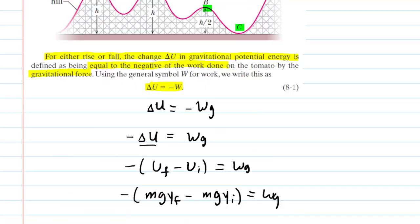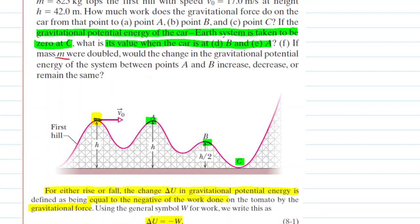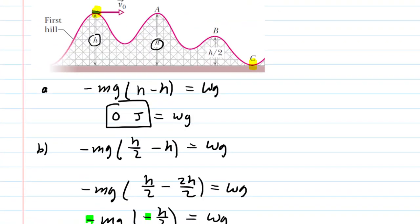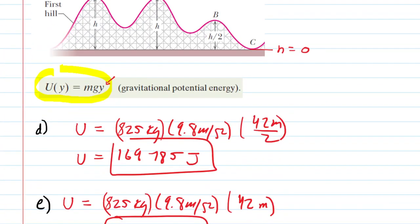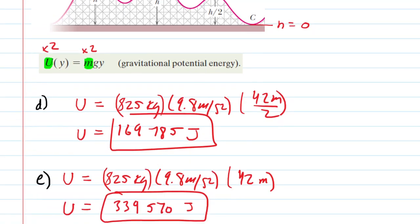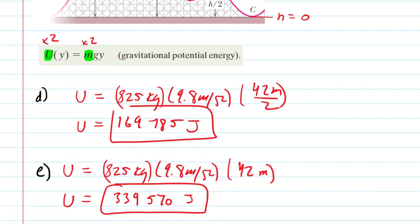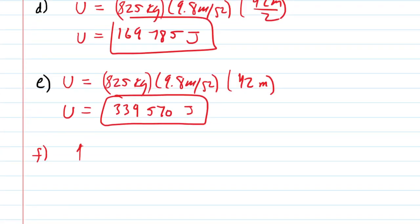The final part of the question asks: if the mass were doubled, would that change the gravitational potential energy of the system, and if so, would it increase or decrease? Certainly, if we doubled the mass, we would change the gravitational potential energy, because U is proportional to mass M. So doubling M, while keeping G and height unchanged, doubles the gravitational potential energy. Our answers to parts D and E would all be doubled. The correct answer for part F is that the gravitational potential energy would increase.